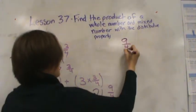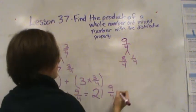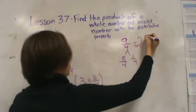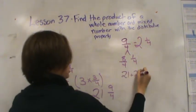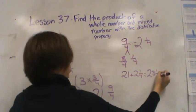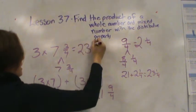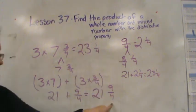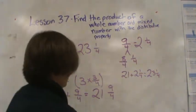So 9 fourths breaks up into 8 fourths and 1 more fourth. 8 fourths is equal to 2 and 1 fourth. I need to add that to my 21. So 21 plus 2 and 1 fourth is equal to 23 and 1 fourth. So the final answer here is 23 and 1 fourth. We had to change our improper fraction into another mixed number and then put them together.